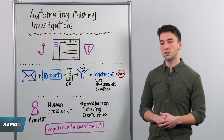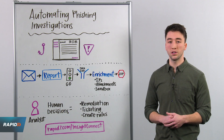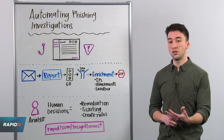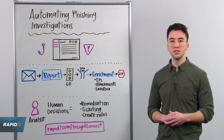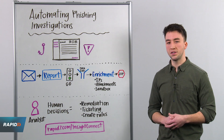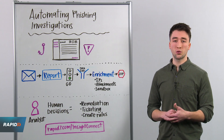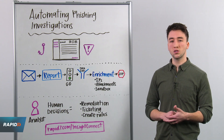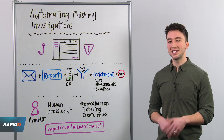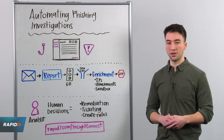Many of our customers are using source solutions to automate investigating a number of alerts, but one of the things they most commonly face is user-reported phish emails. We've reached a point where users are reporting potential phishing messages with increased frequency, which is great, but it's also overwhelming security teams. With automation, we can significantly shorten the time it takes to investigate each one of these alerts.